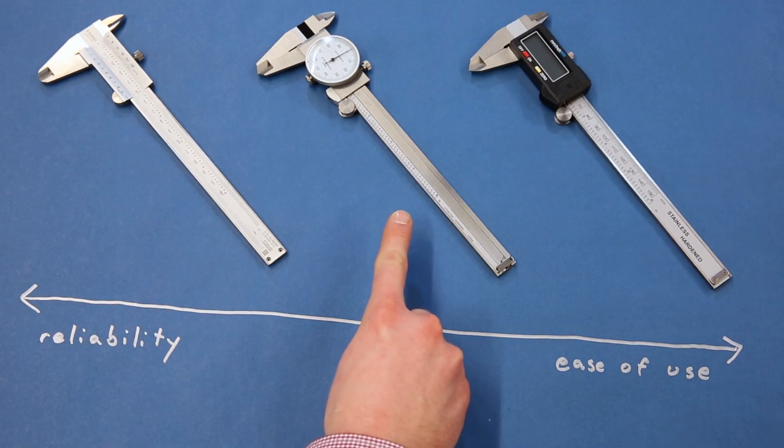Dial calipers are easier than vernier to read, but use a rack and pinion to display the fine measurement on the dial. This added mechanical complexity means more points of failure, which means that it's easier to break and harder to fix dial calipers.